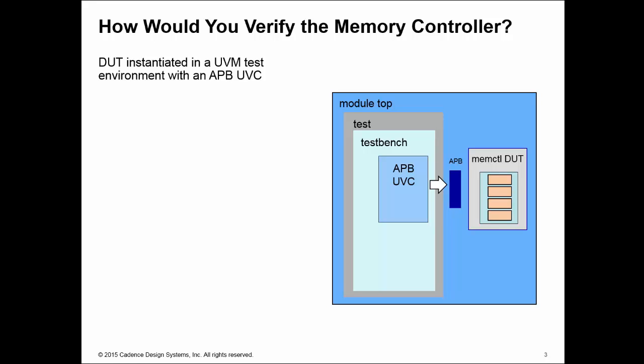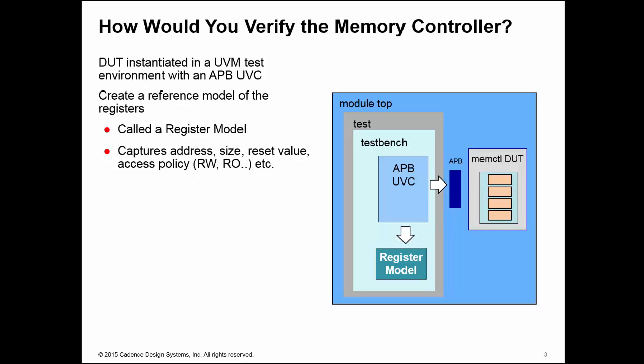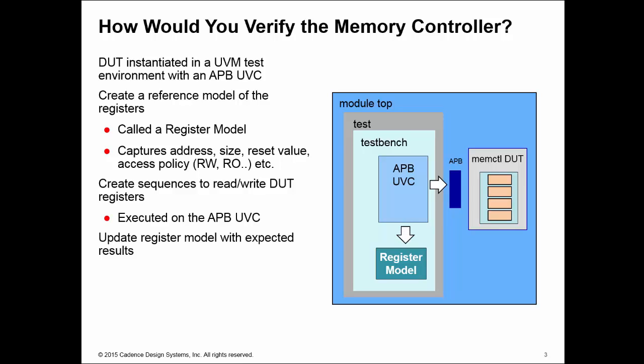Here I have the memory controller instantiated and connected to a UVM testbench environment that has a UVC of the APB protocol to allow us to read and write from a DUT. I'm going to create a reference model of the registers inside of my UVM testbench - this is what we call the register model. This will capture the address, size, reset value, and all the characteristics of the registers inside the DUT. I'll then run sequences on my APB UVC to read and write the DUT registers, and if I do a write on the register of my DUT, I'll also update the register model with the expected results.